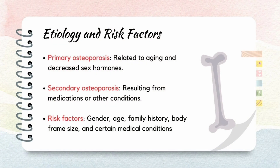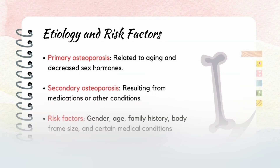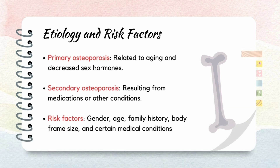Talking about the etiology of osteoporosis. Primary osteoporosis is related to the aging process, in conjunction with decreasing sex hormones. Other diseases or their treatments cause secondary osteoporosis. Men are much more likely than women to have secondary osteoporosis. Common medications that can lead to secondary osteoporosis include glucocorticoids and antiepileptics.